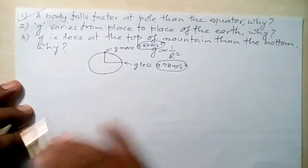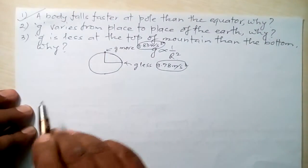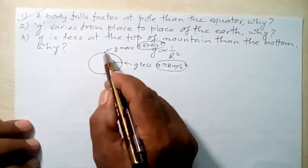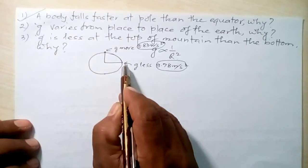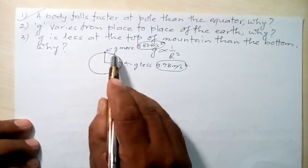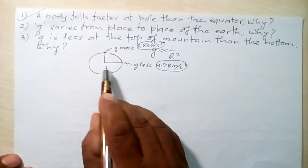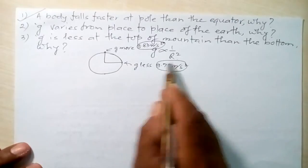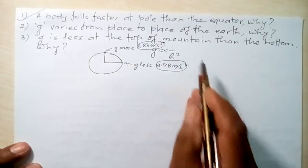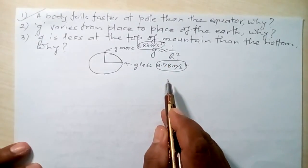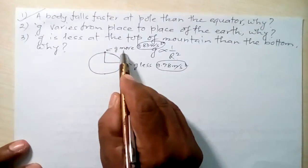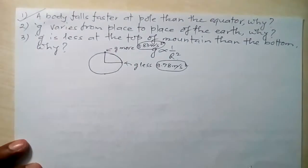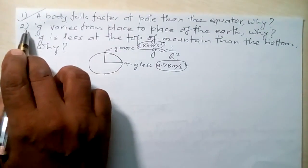So the answer to the first question is: Earth is flattened at the pole and bulges at the equator. The polar radius is less and the equatorial radius is more. Since g is inversely proportional to the square of the radius, g is more at the pole and less at the equator. Because g is more at the pole, a body falls faster there.